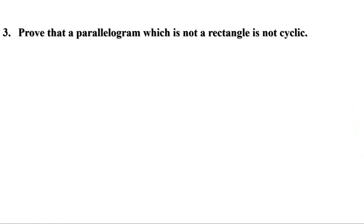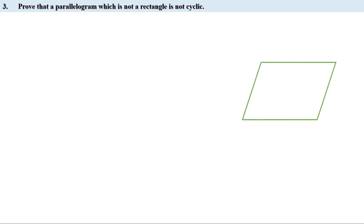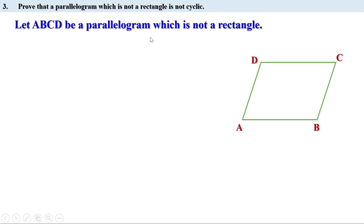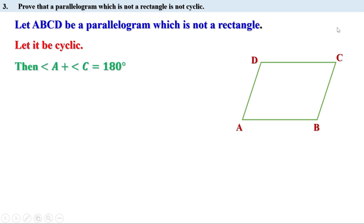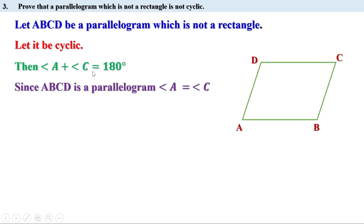Next problem: prove that a parallelogram which is not a rectangle is not cyclic. Let ABCD be a parallelogram which is not a rectangle. We have to prove it is not cyclic. Instead, let us assume it is cyclic. If it is a cyclic quadrilateral, the opposite angles are supplementary, so angle A plus angle C equals 180 degrees. Since ABCD is a parallelogram, opposite angles are equal, so angle A equals angle C. This means each angle equals 90 degrees.